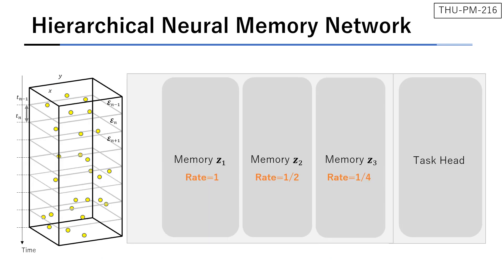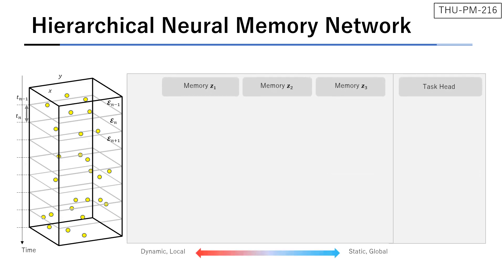To achieve this concept, we propose hierarchical neural network. The proposed model consists of 3 neural memories with different rates and a task-specific head. The memory Z1 has the highest frequency. Every time step, event data is written into Z1 memory state. Then, the memory state is updated by residual blocks.